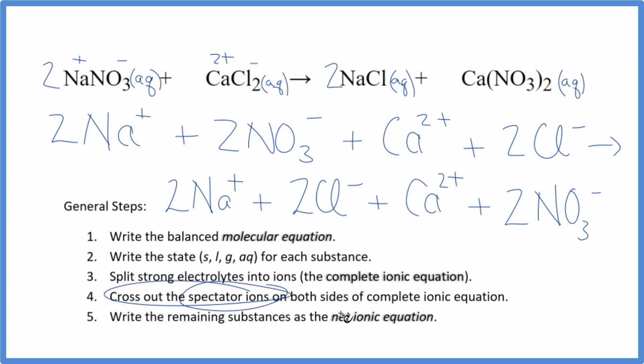Then we cross out the spectator ions. They're on both sides, reactants and products. So we have two sodium ions in the reactants and in the products. Two nitrates, two nitrates.